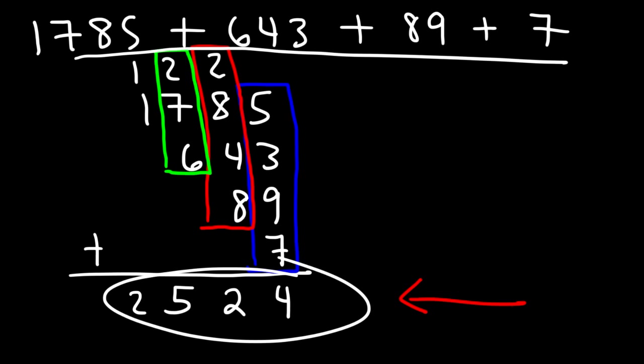And that's basically it for this video. Now you know how to add numbers, even a group of numbers — just stack them together and add column by column. Make sure to carry over any digit in the tens place. Thanks for watching.